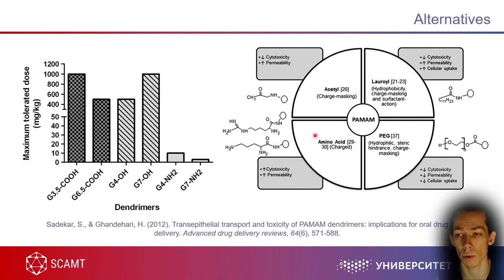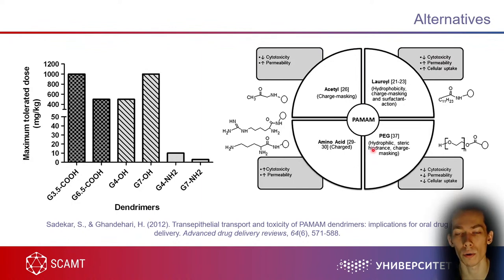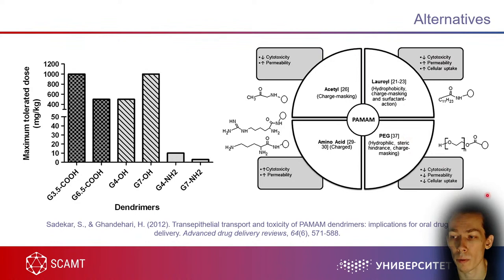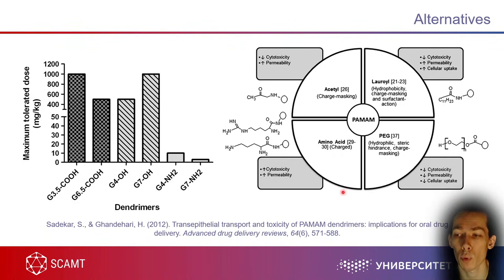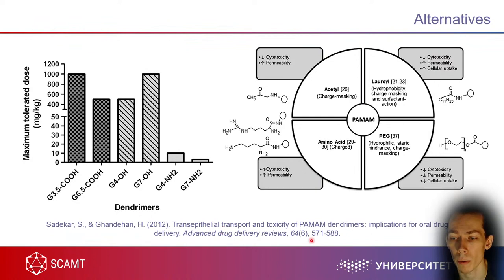PAMAM can even be modified with polymers — for example, covered in PEG. But remember PEG also has some toxicity. Two toxic agents together may result in lower overall toxicity — that can happen. Cell uptake and permeability will decrease. Amino acid additions are another option. Even polymers can be modified for particular approaches. For further reading on PAMAM dendrimers and toxicity, Advanced Drug Delivery Reviews has a good review.